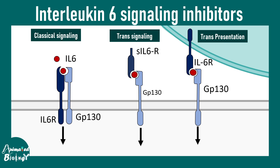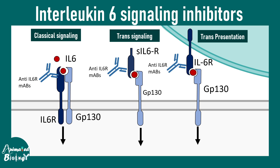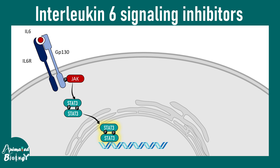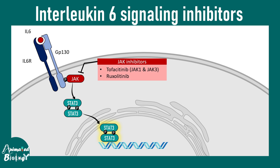Understanding the signaling in detail is important because many aspects of these pathways are targeted by therapeutics. All these pathways are targeted by specific antibodies, such as anti-IL-6 receptor antibodies which bind to the IL-6 receptor whether soluble or membrane-bound, and IL-6 antibodies which bind to the IL-6 ligand itself rather than the receptor. Both lead to inhibition of signal initiation by the interleukin-6 receptor. There are also downstream modulators such as JAK inhibitors like tofacitinib or ruxolitinib, and STAT inhibitors that prevent downstream signaling.